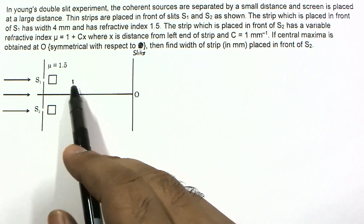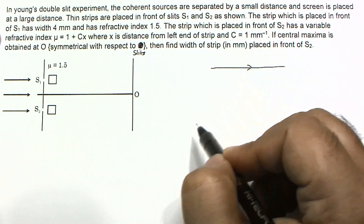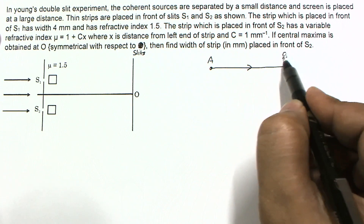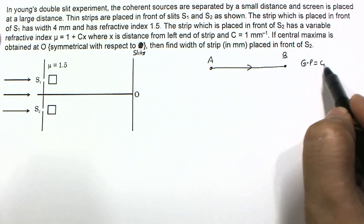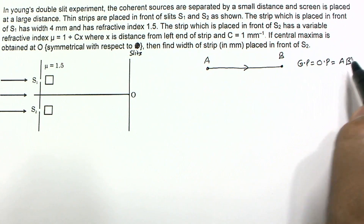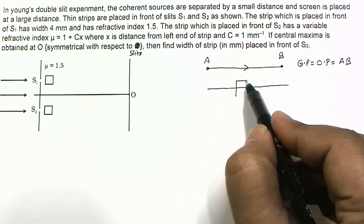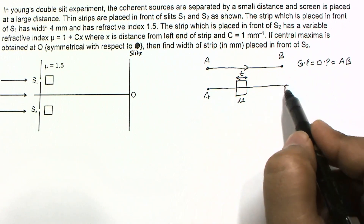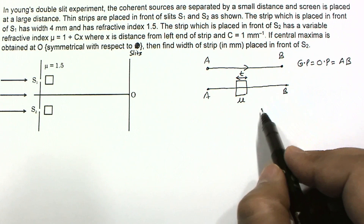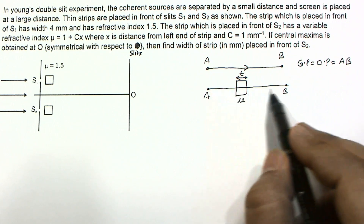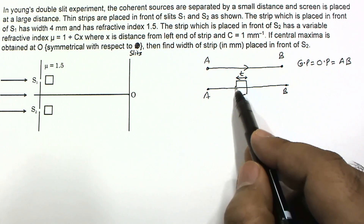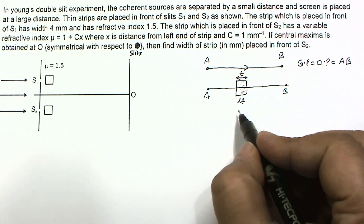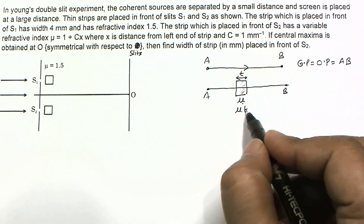We need to look at the optical path difference between the two lights. If a ray travels completely in vacuum from point A to B, the optical path equals the geometrical path. But if there is a medium of thickness t and refractive index μ in between, then the optical path through that medium is μ times t.